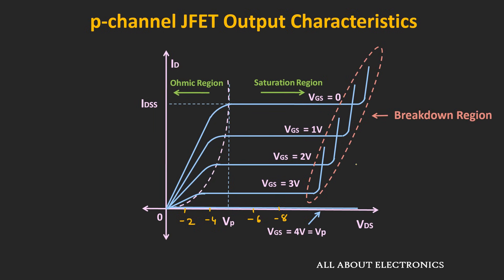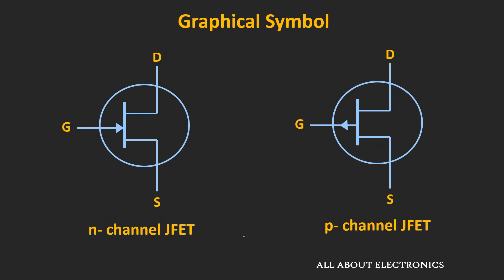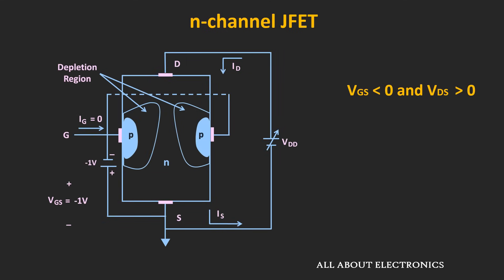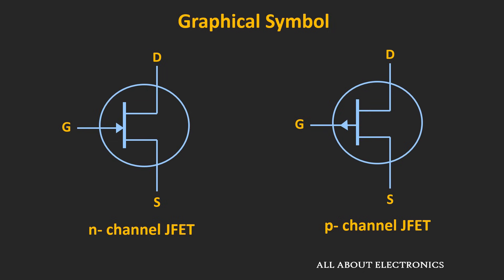Now let's see the electronic symbols of the N-channel and P-channel JFET. Both symbols have three terminals: gate, drain, and source. They look almost identical, but the only difference is the direction of the arrow. In case of a N-channel JFET, the arrow is going inwards, while in case of a P-channel JFET, the arrow is going outwards. This arrow indicates the direction of current flow whenever the P-N junction is forward-biased. Sometimes an alternative symbol is also used for both N-channel and P-channel JFETs.